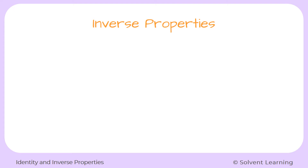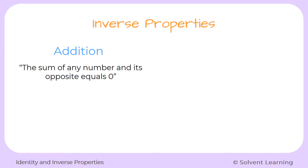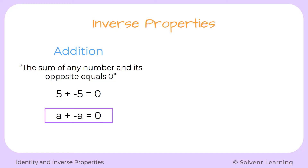Next we have the inverse properties. The inverse property for addition tells us that the sum of any number and its opposite equals 0. The opposite of a number just means we're changing the sign. So if we have positive 5, the opposite is negative 5. Or if we start with negative 5, the opposite is positive 5. So if we add positive 5 plus its opposite, negative 5, we'll get 0 as our answer.